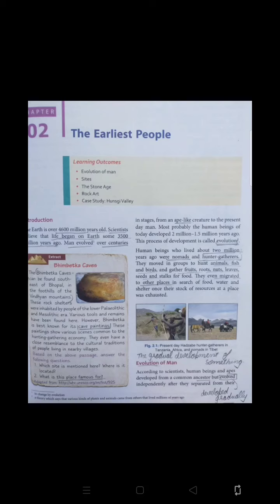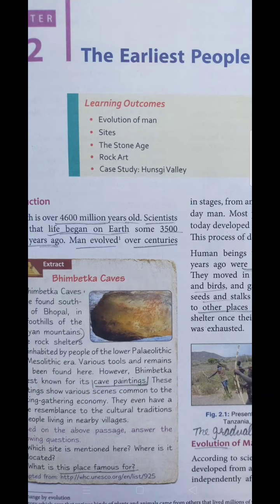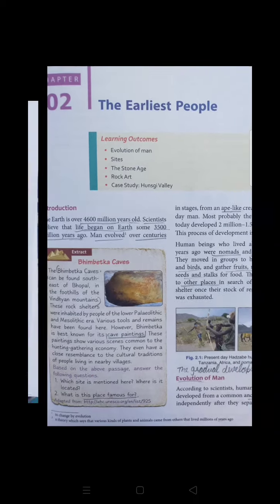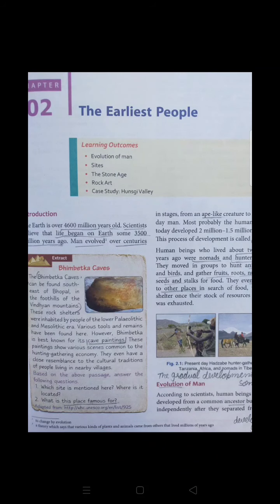From that chapter you came to know about what is actually the history, how we are able to find out the different sources that are present in the history. But in today's chapter we are going to understand the first phase of our history that is representing the earliest people. So here we came to know about the evolution of man, how the man is being gradually developed, and along with that we will discuss about the stone age and the rock art that is present in the ancient India.